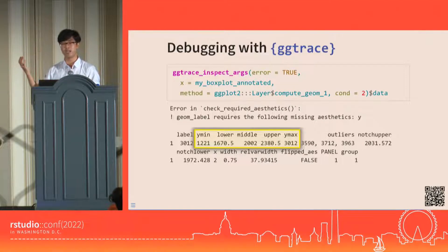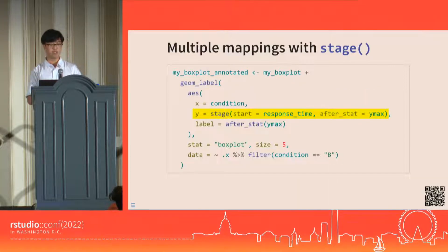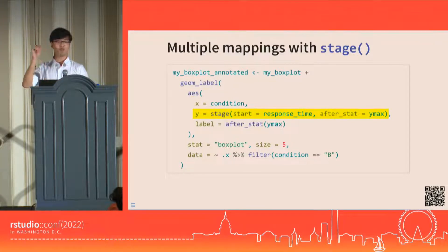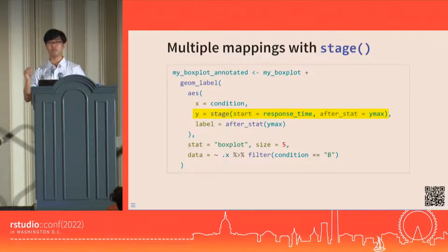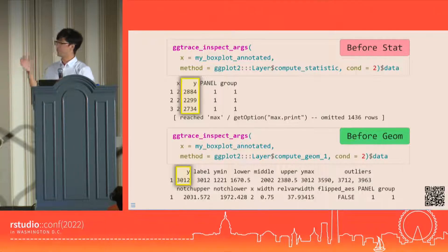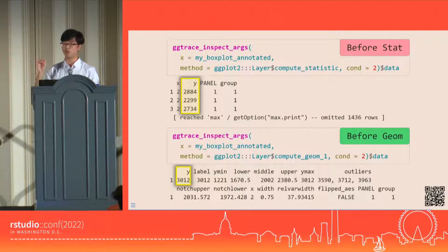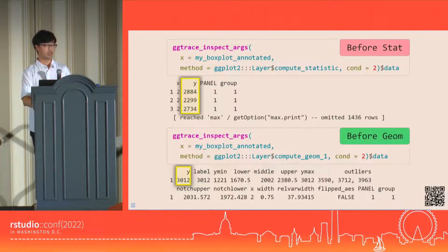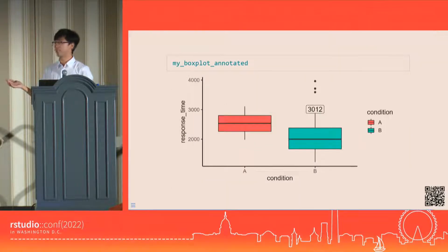To resolve that, we can use the stage function to map y at the start to satisfy the stat, and then remap to ymax in the after stat to satisfy the geom. That gets us the layer that we want, because this ensures that both the before stat data and the before geom data has a y column present. That's what finally gets the layer working.